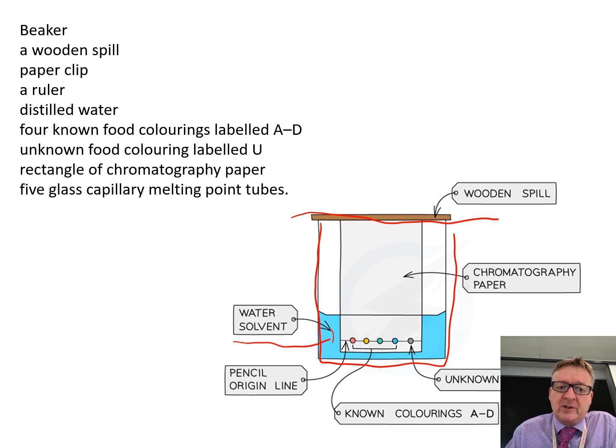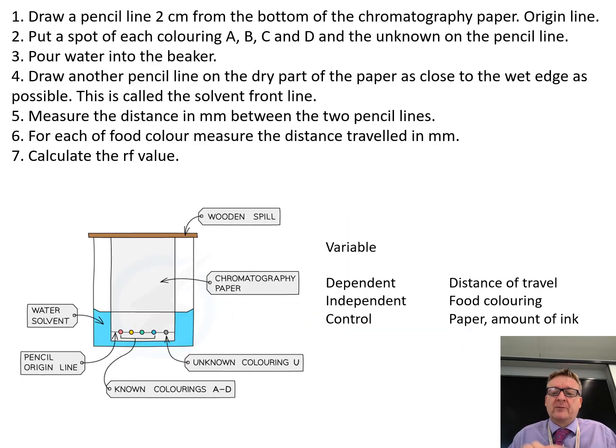You also need distilled water which goes in the bottom, four known food colorings labeled A-D, an unknown food coloring, and rectangular chromatography paper.